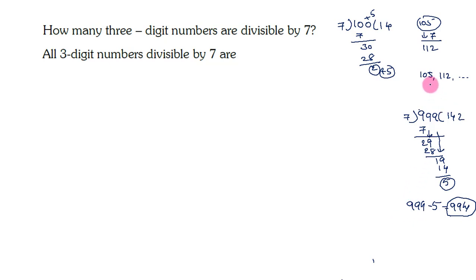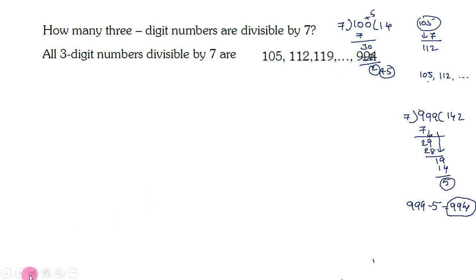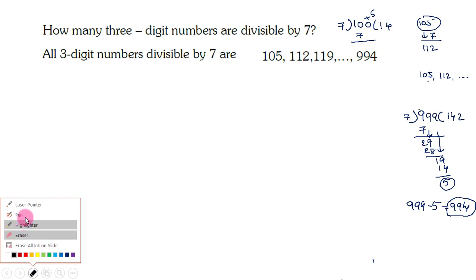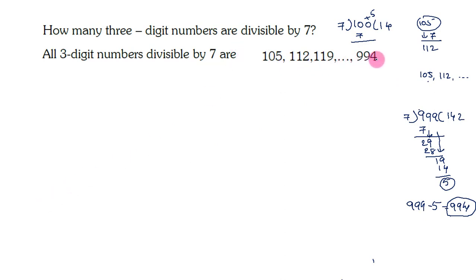So the least three-digit number divisible by 7 is 105, and the greatest is 994. All three-digit numbers divisible by 7 are: 105, 112, 119, and so on up to 994. Now, are these numbers in an AP? Adding 7 to 105 gives 112, and adding 7 to 112 gives 119. The difference between consecutive terms is the same, so yes, these are in AP.